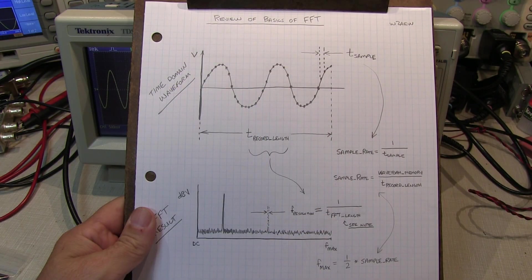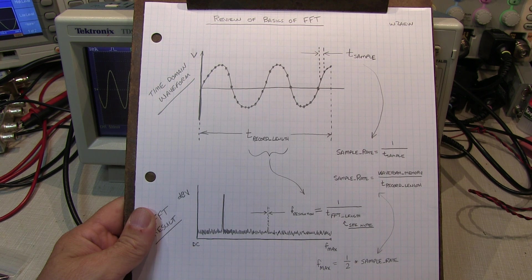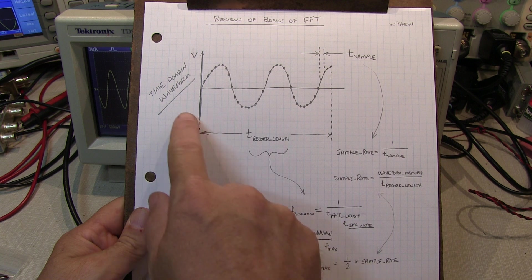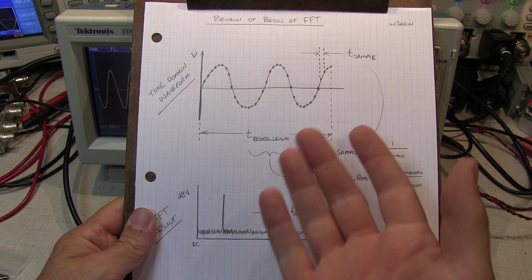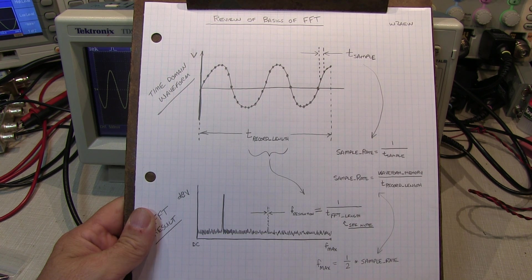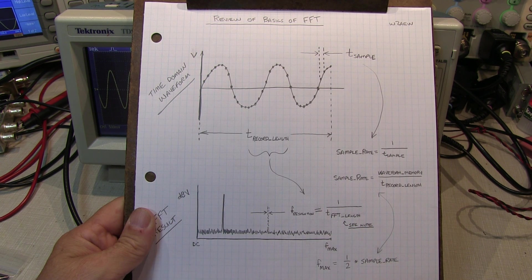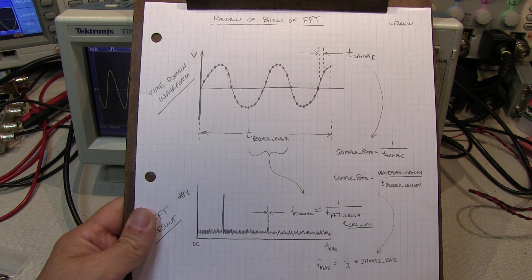I did a video a while back — video number 65 — that goes into a lot more detail on the basics of an FFT, so I'll just review the highlights here. An FFT is a function that takes the time domain waveform captured by the scope and shows you the frequency domain content, plotting amplitude usually in a logarithmic scale versus frequency, so you can actually see what spectral components are in your signal.